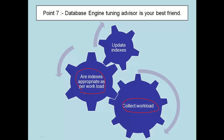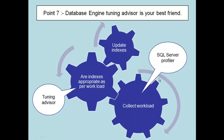If they are not appropriate, you would like to go and update the indexes as per the workload. In other words, it's a three-step process: first you collect the workload, second you analyze if the indexes are appropriate as per the workload, and then you update your indexes. Both the collection of the workload and analyzing if the indexes are appropriate cannot be a manual process — we would like to use some kind of tool for this.